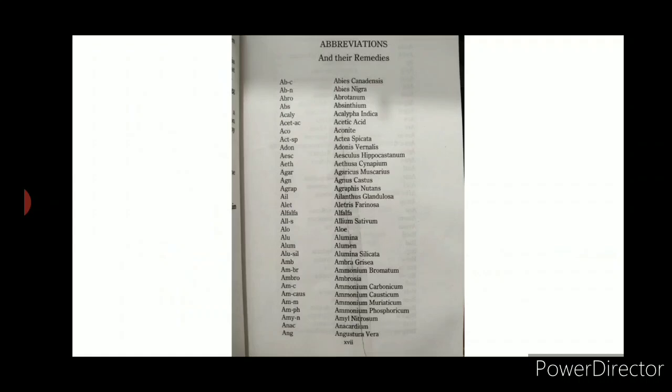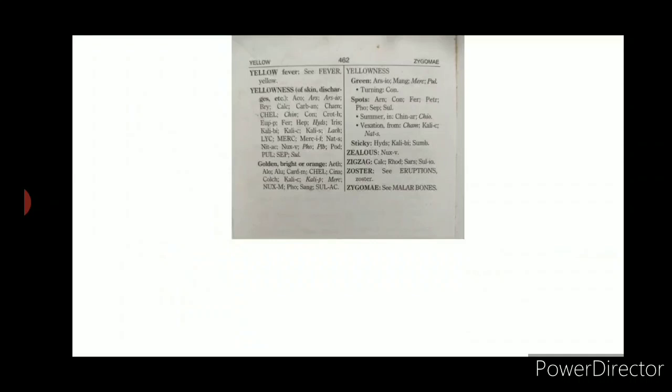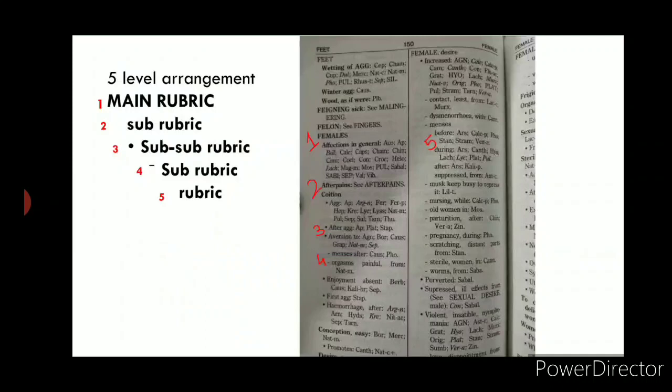The third part is the repertory proper. This is where the list of abbreviations begins and the main portion of the repertory starts. The first rubric of this repertory is 'Abdomen' and the last rubric is 'Zygoma.'